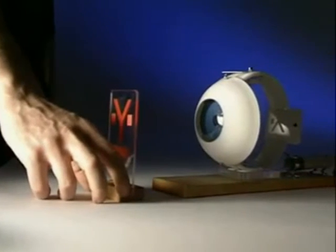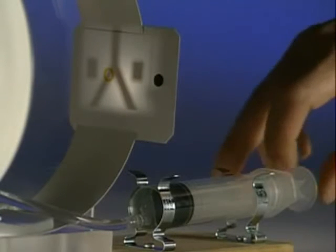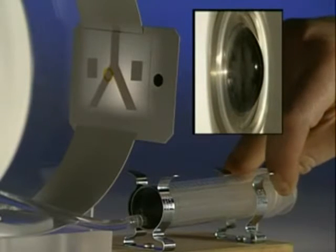Move the object closer to the lens and the image on the retina goes out of focus. But increase the thickness of the lens and it's back in focus.